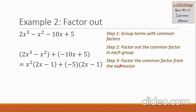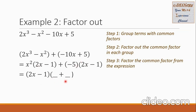For step 3, we factor the common factor from the expression. From the two big groups, the common factor is the binomial 2x minus 1. So I pull it out — 2x minus 1 is now outside. For the second factor, I put two blanks because I have binomials, so there should be a binomial in the second factor as well. I collect the remaining terms: x squared from group 1, and negative 5 from group 2.